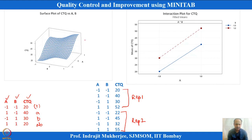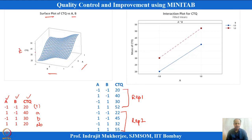A surface plot is also possible in Minitab. If A and B are treated as continuous variables, we can place CTQ on the Z dimension and plot that. Interaction effects can also be seen without replicates, and with replicates interaction plots are always possible.